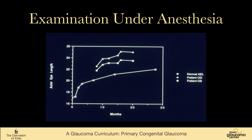We also follow axial eye lengths serially. The normal axial eye length can be tracked over growth of a child from birth to 30 months. In an affected patient, the right and left eyes are big and growing; after surgery, that growth falls off towards the normal growth curve, then may get out of control again and back under control. In our clinic, we find axial eye lengths to be a very useful way of following these babies.